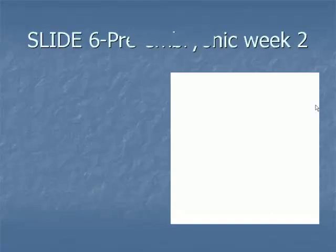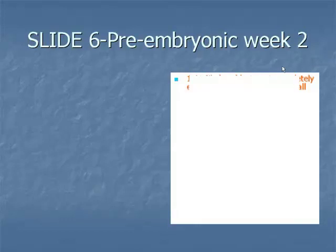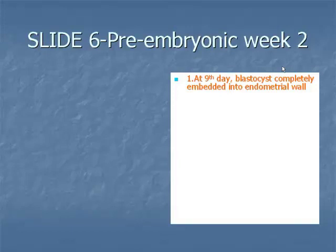Slide 6: the pre-embryonic period, Week 2. Item 1: at approximately day 9, the blastocyst is embedded completely beneath the endometrial epithelium, and spaces appear in the syncytiotrophoblast that in two days form the lacunar network by fusion.